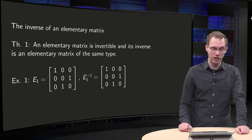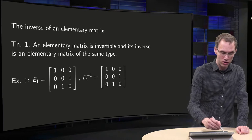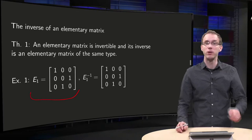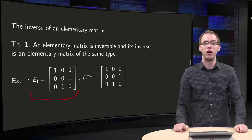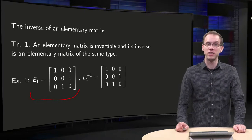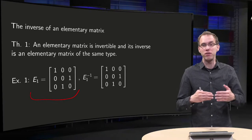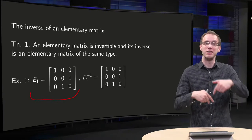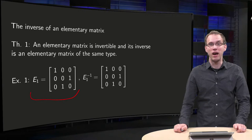So what is the inverse of an elementary matrix? Let us start with our first type, E1. You get that by interchanging two rows of the identity matrix. For the inverse, you need to interchange them back basically. How can you do that?